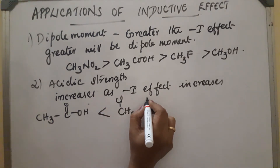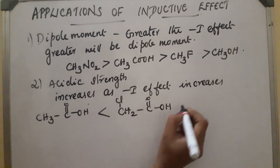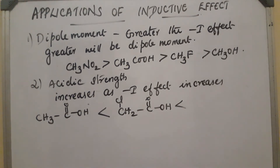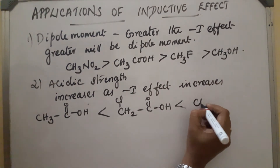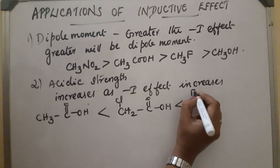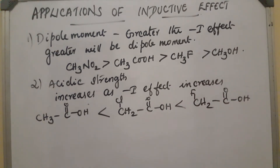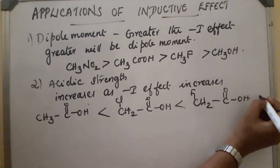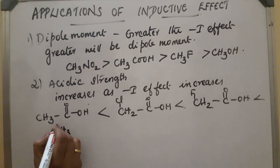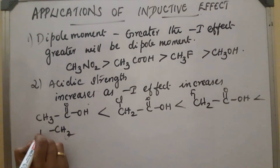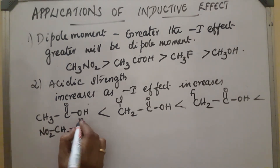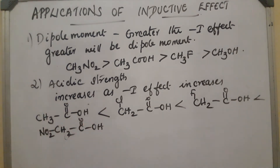So CH2ClCOOH has greater acidic strength than CH3COOH. If CH2F is added instead, it will be even more acidic since F has a greater minus-I effect than Cl. If a NO2 group is added, the acidic strength increases further.